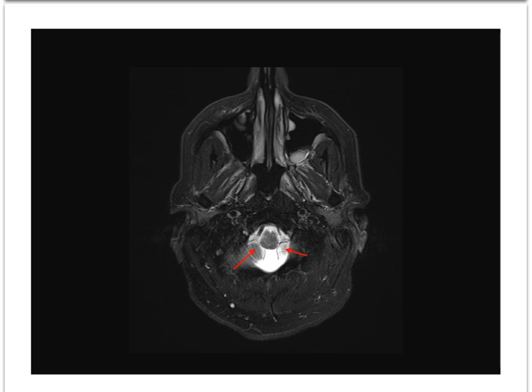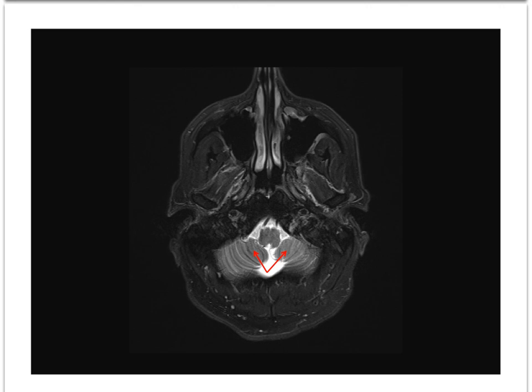At the next level up, the cerebellar tonsils are visible at the level of the hypoglossal canals that conduct the 12th cranial nerve, or hypoglossal nerve, to innervate the tongue.